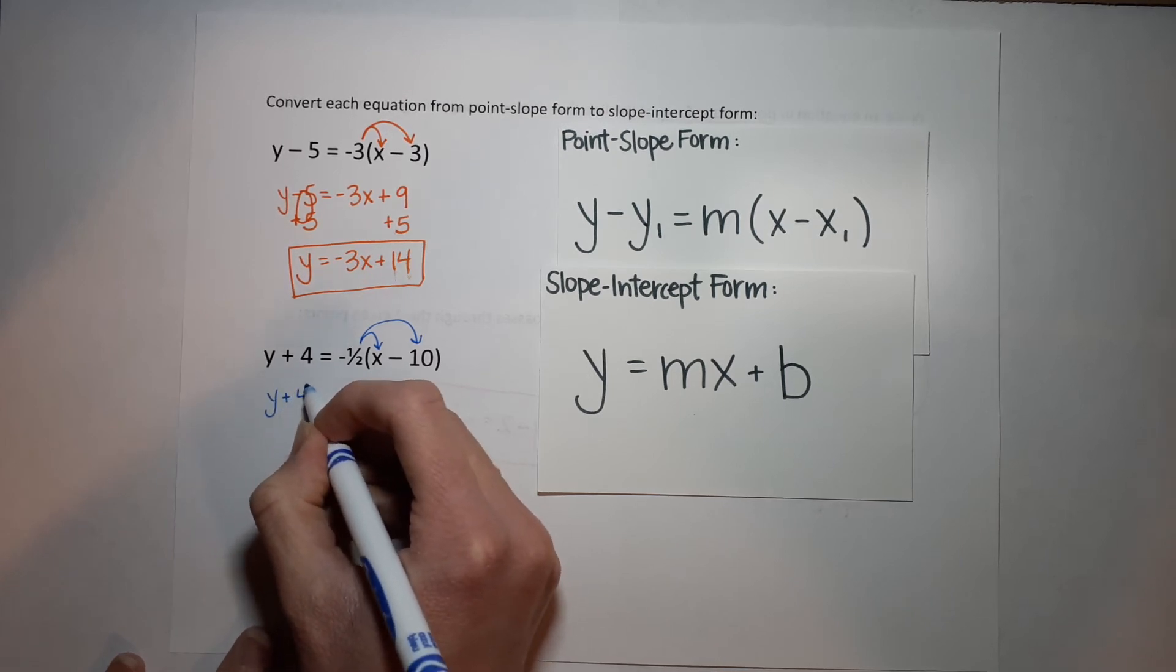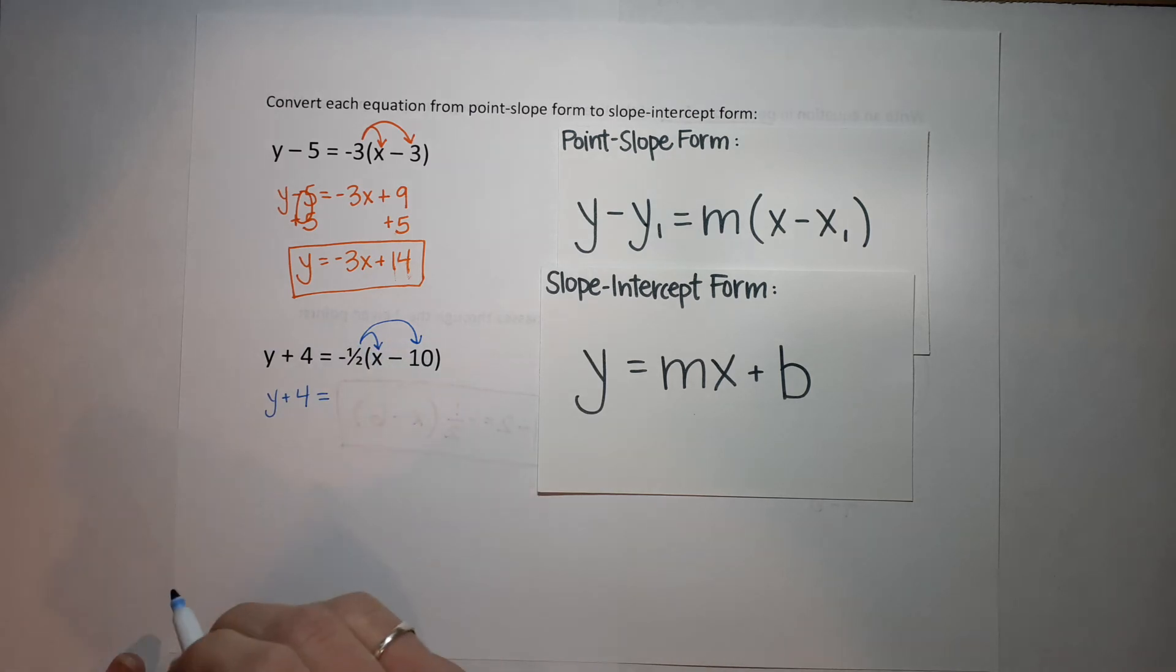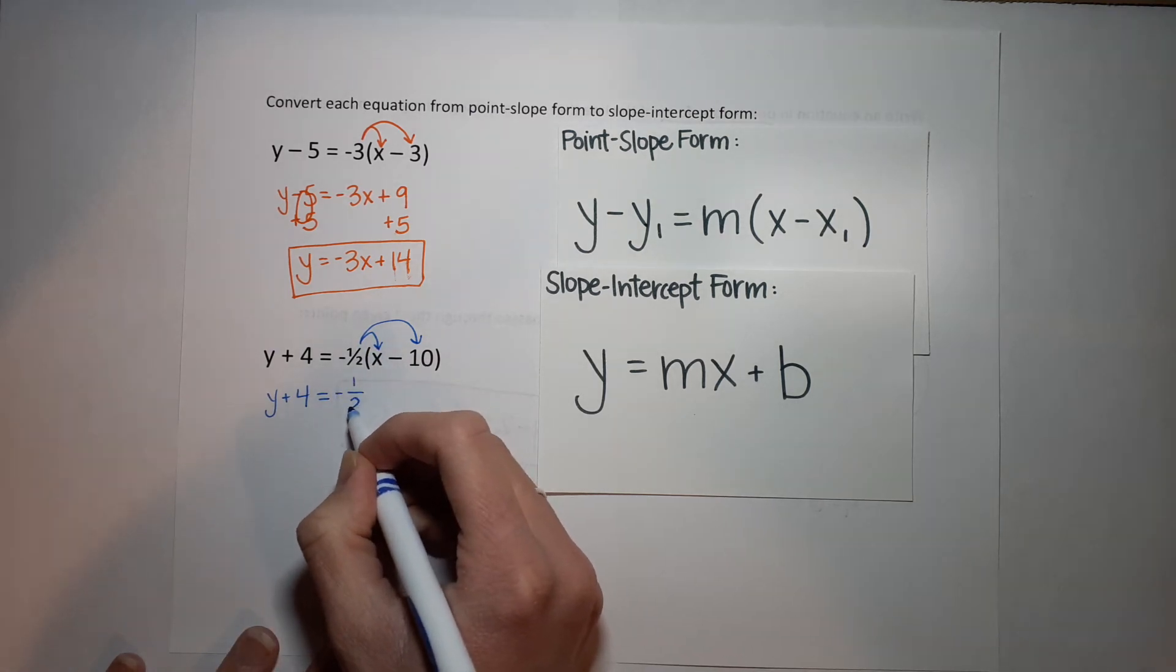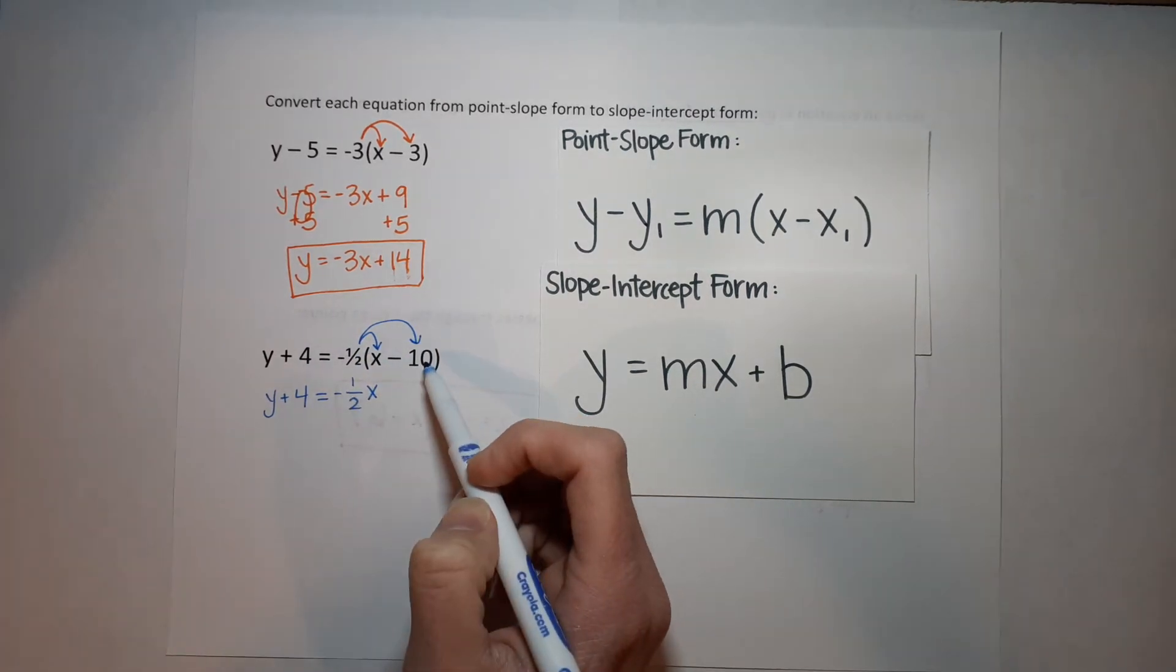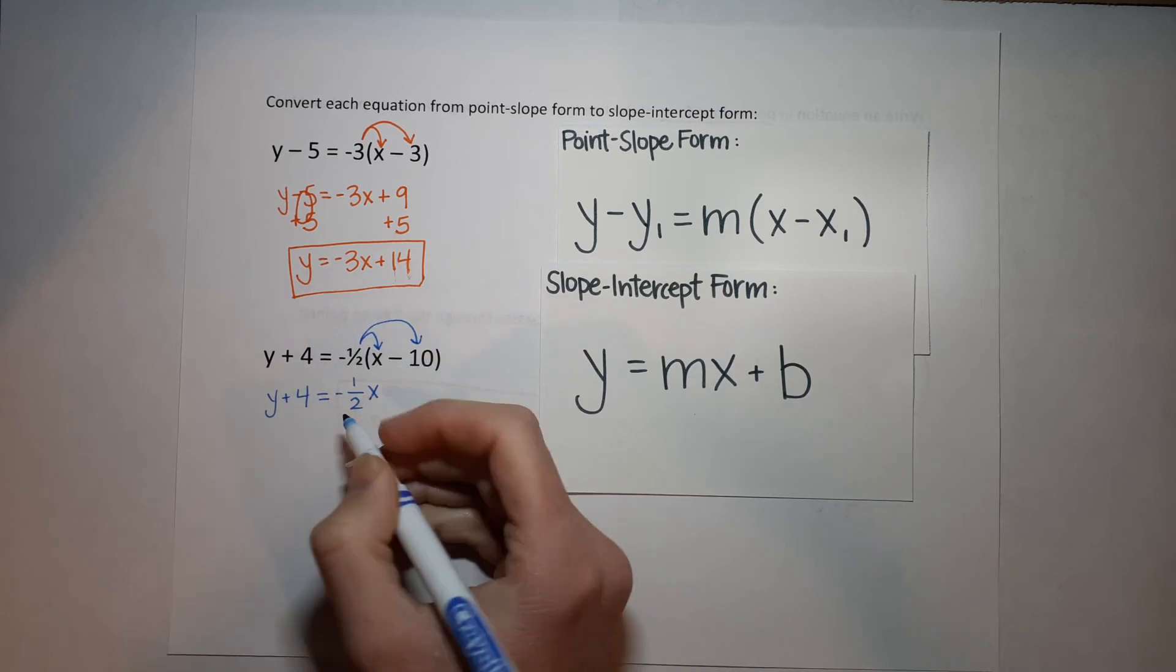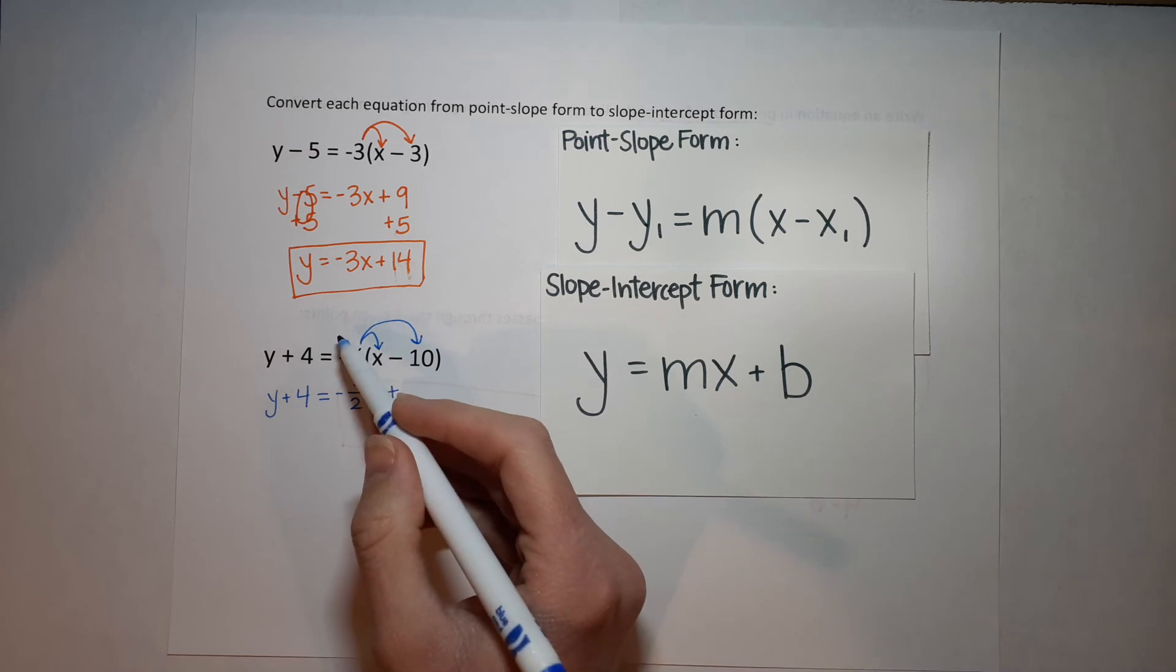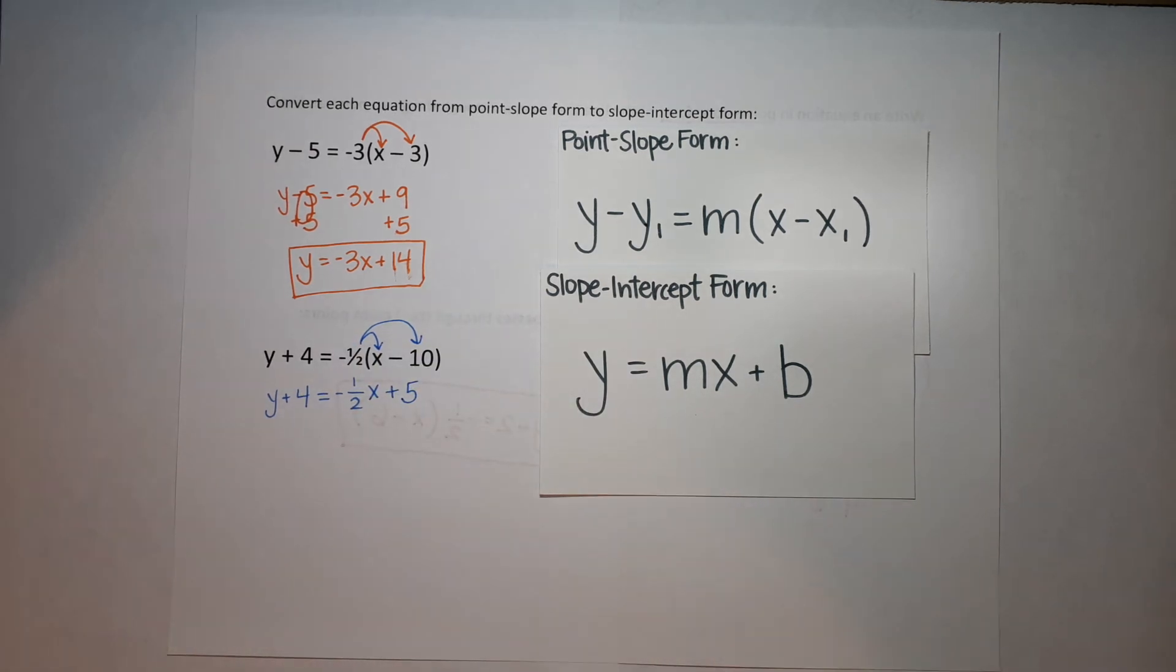So when I do that, over here stays the same. y plus 4 equals, I've got negative 1 half times x, which just gives me negative 1 half x. I just write them next to each other. Then I've got negative 1 half times negative 10. A negative times a negative is a positive. And then I can think of this as what's half of 10. Oh, well, 5.